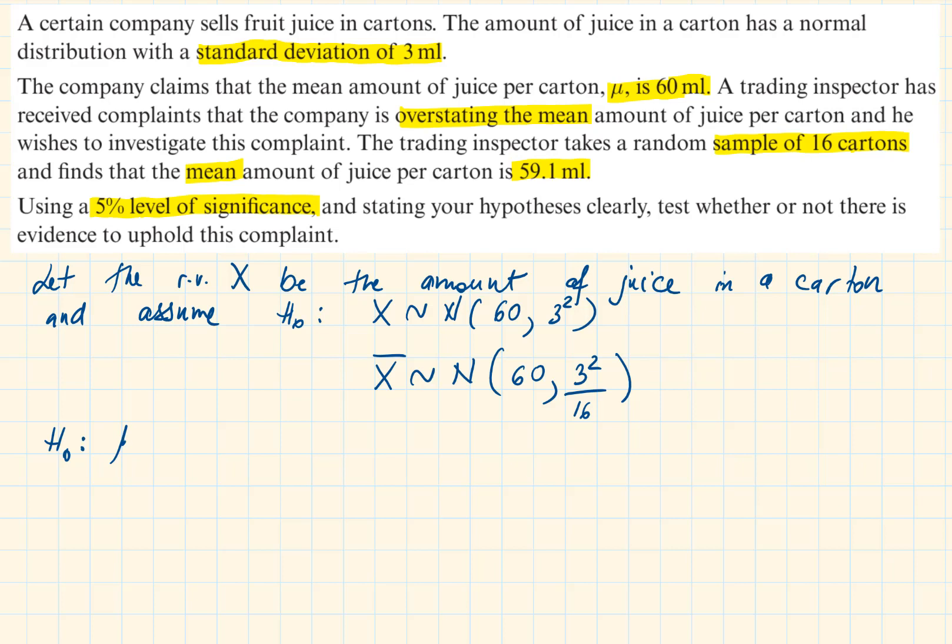Our null hypothesis is mean equals 60 and the alternate hypothesis is mean is less than 60. The reason we have less than 60 is because of the keyword overstating the mean.